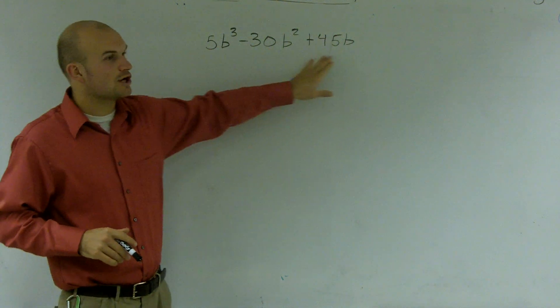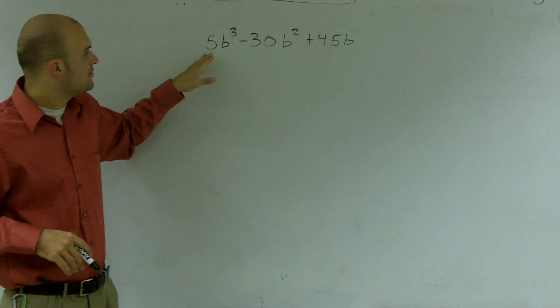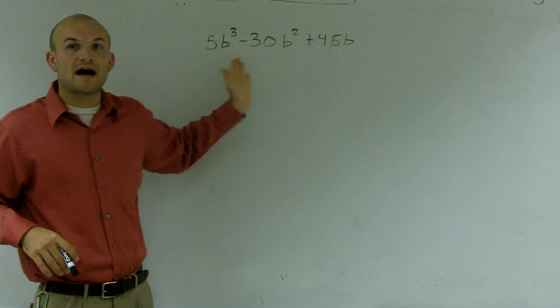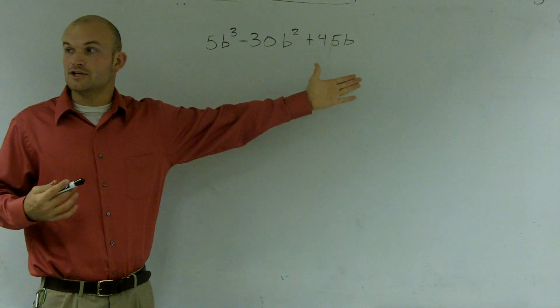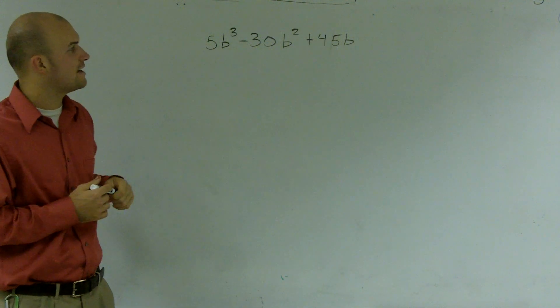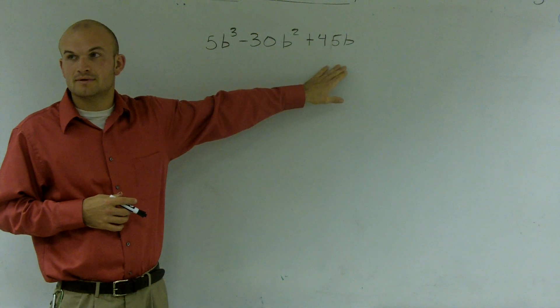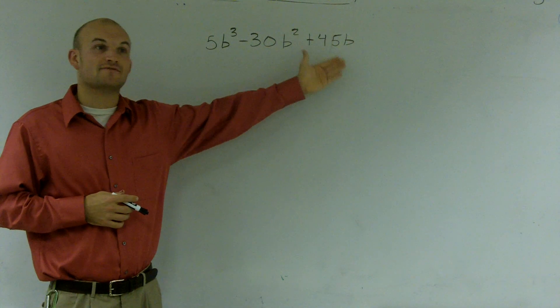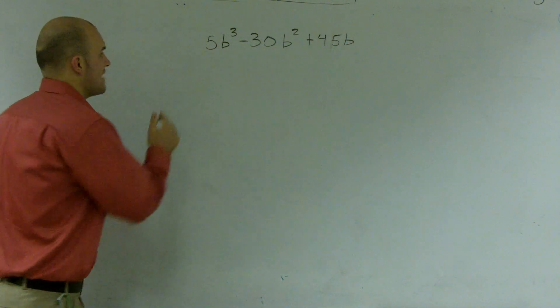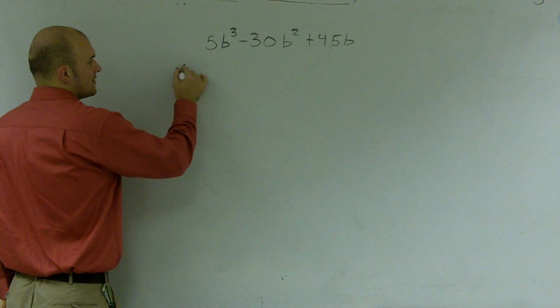I look at each one of these terms, and I notice they're all divisible by 5, meaning 5 divides into all of them. So I can factor out a 5. I also notice that they all have a b term, so I can also divide out a b. When I factor out a 5b,